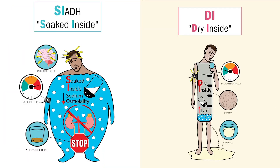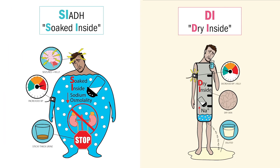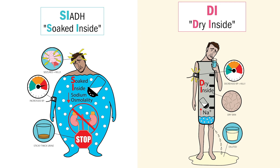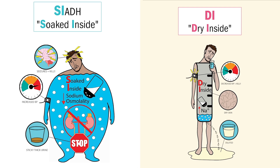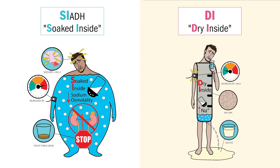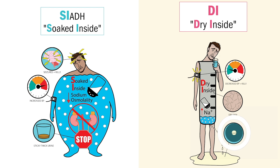Let's wrap up SIADH versus DI — Syndrome of Inappropriate Antidiuretic Hormone versus Diabetes Insipidus. In SIADH, we stop urinating and we get SI — soaked inside — with low liquidy labs. And in DI, we diurese or basically drain a lot of fluid, so we get DI — dry inside — with high and dry lab values.